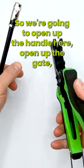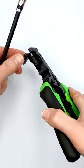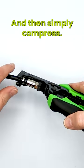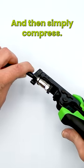So we're going to open up the handle here, open up the gate, and then you put the F connector in and then close the gate. Remember, close that gate and then simply compress.